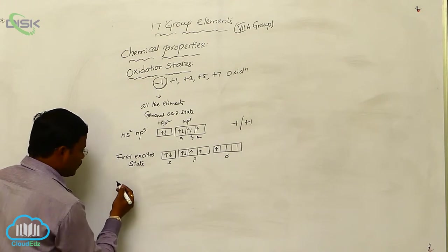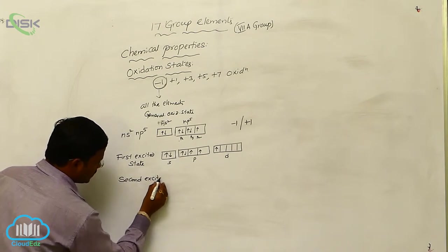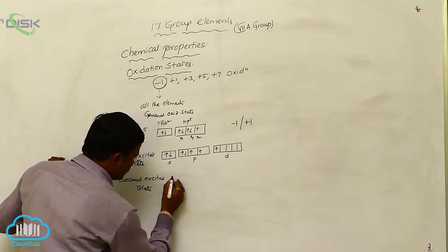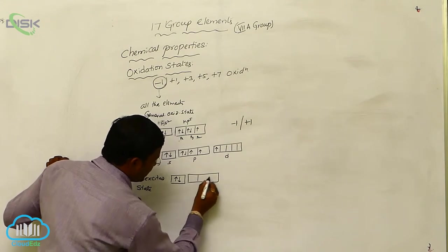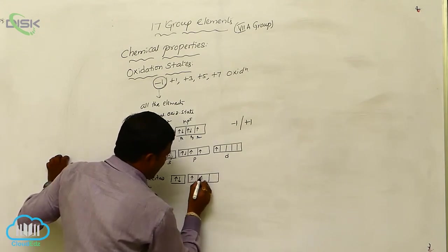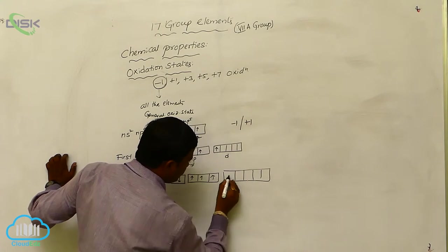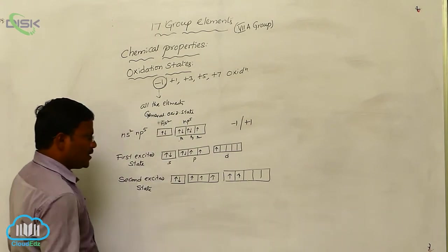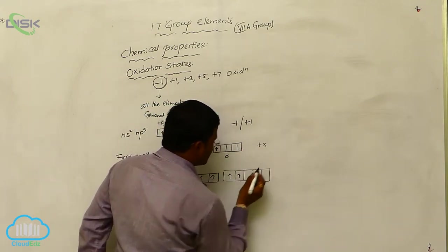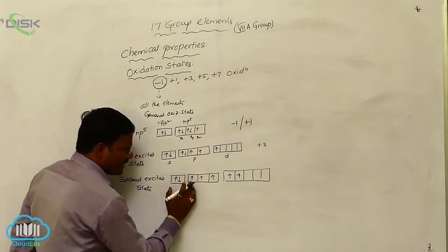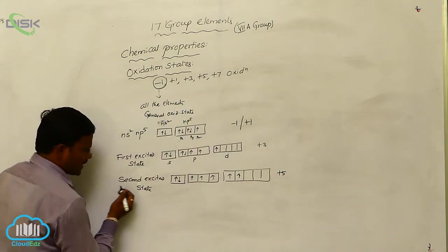Where chlorine, bromine, and iodine in their second excited state will show the electron configuration as follows: during the second excited state, the electron from the px orbital jumps into the d orbital again. How many single electrons are present in the orbital? 3 — so plus 3 oxidation state results from the first excited state. How many single electrons are present in the orbital? 5 — hence plus 5 oxidation state results from the second excited state.